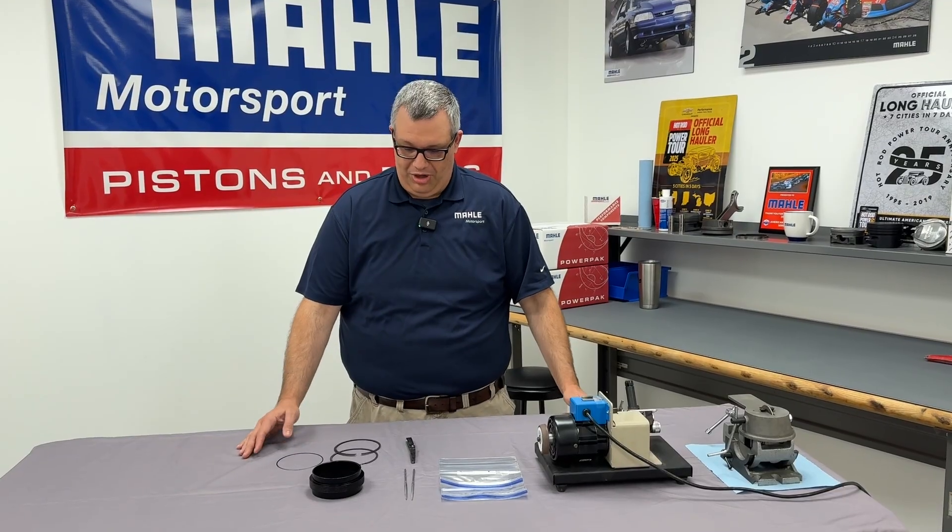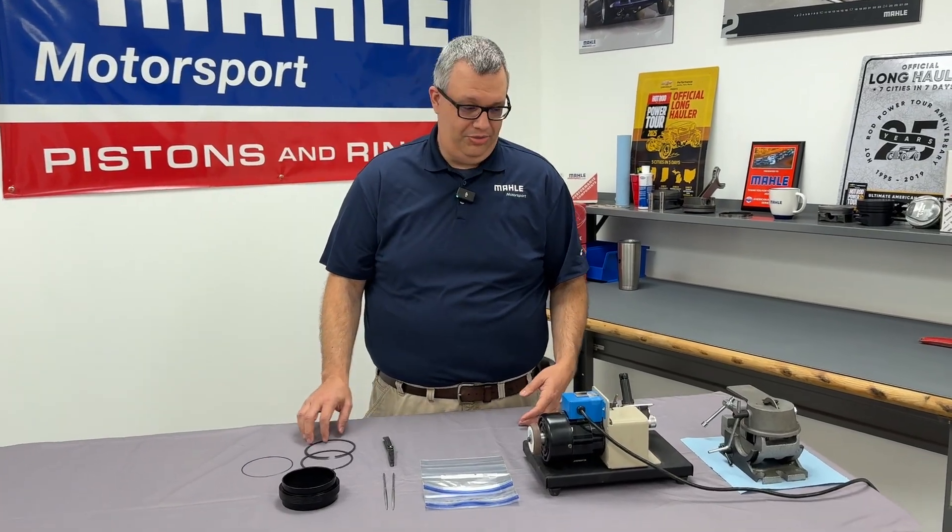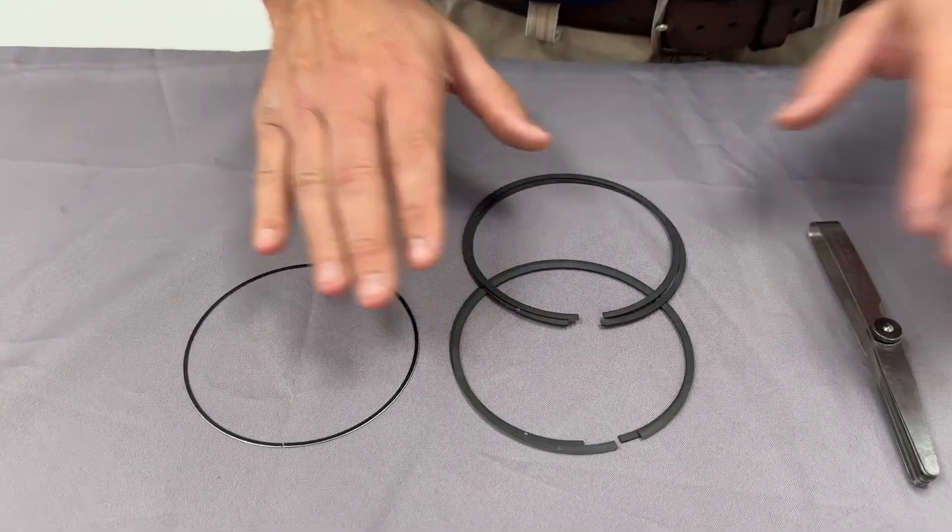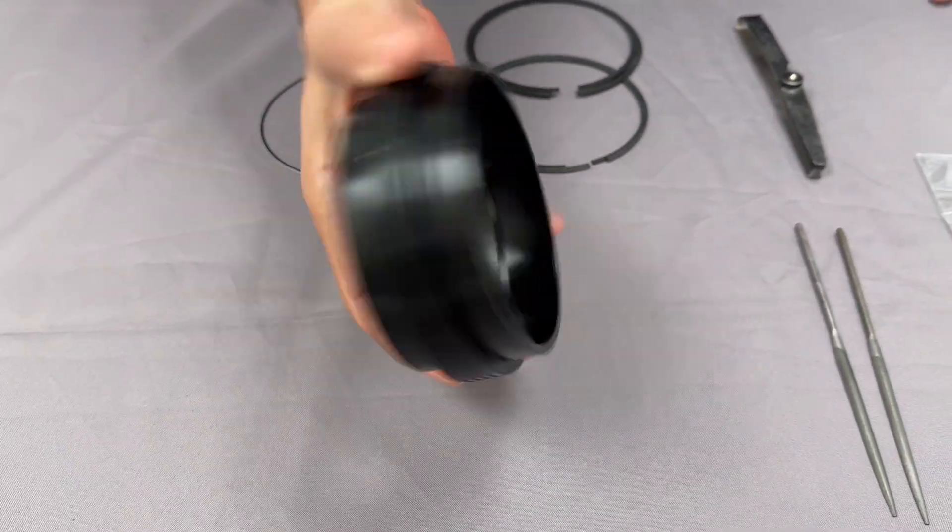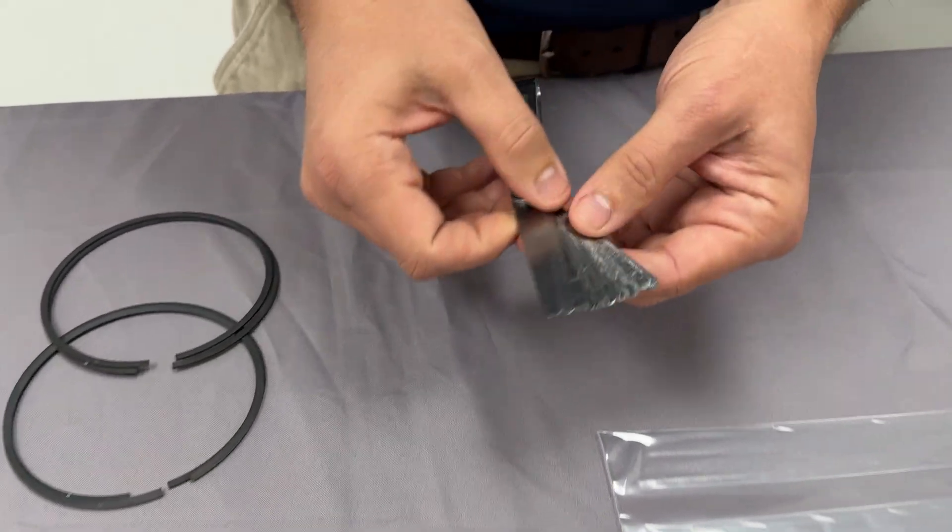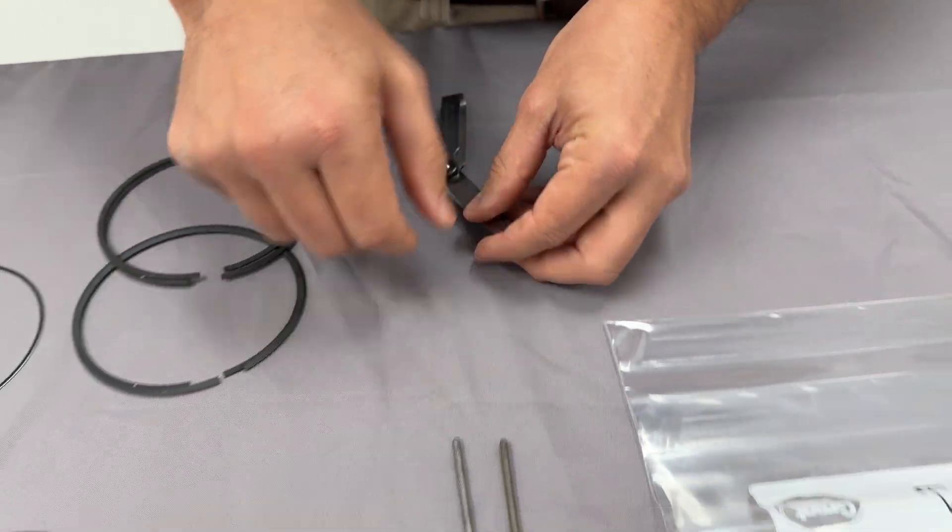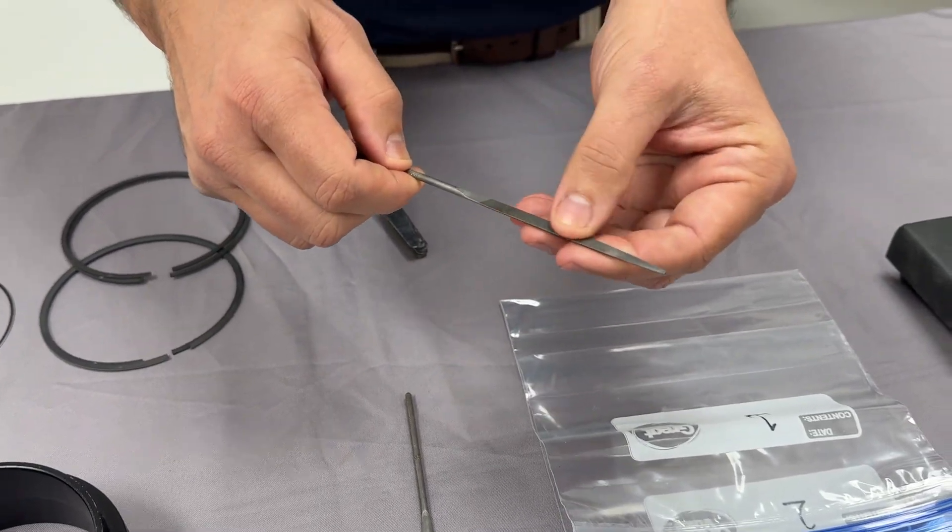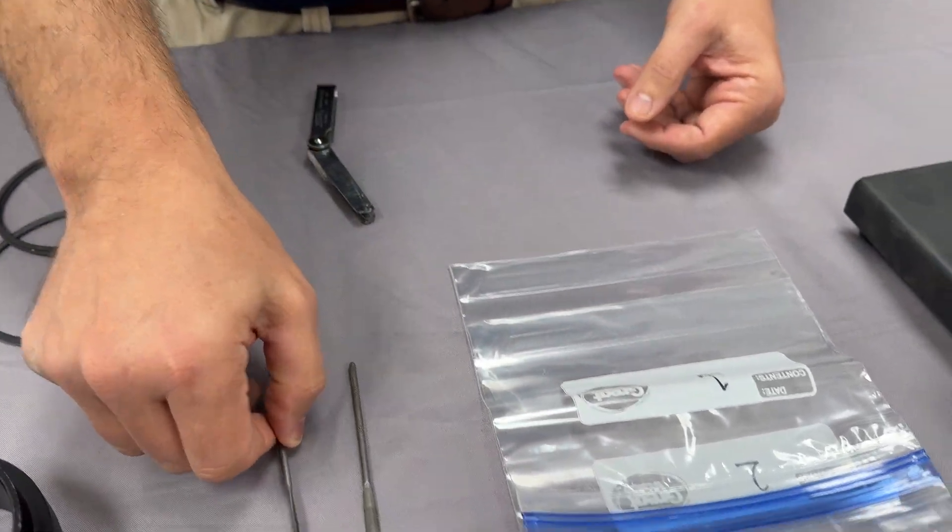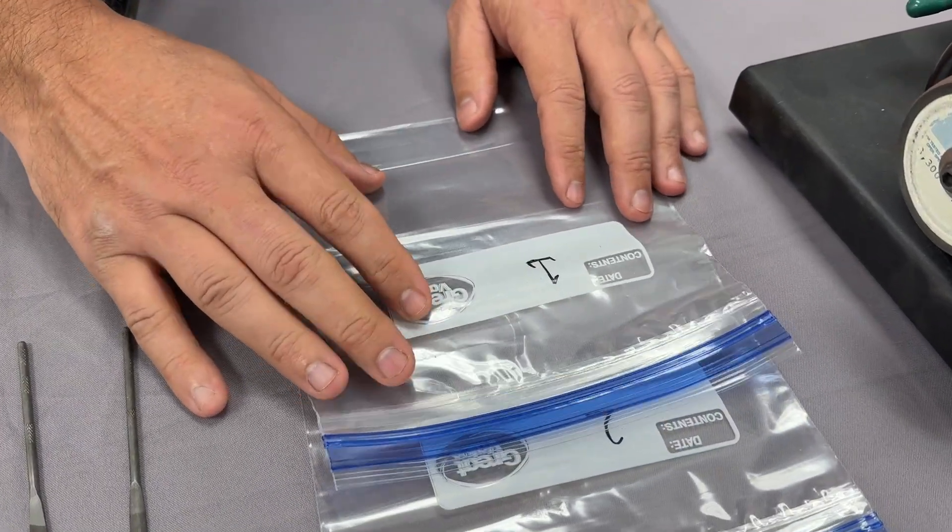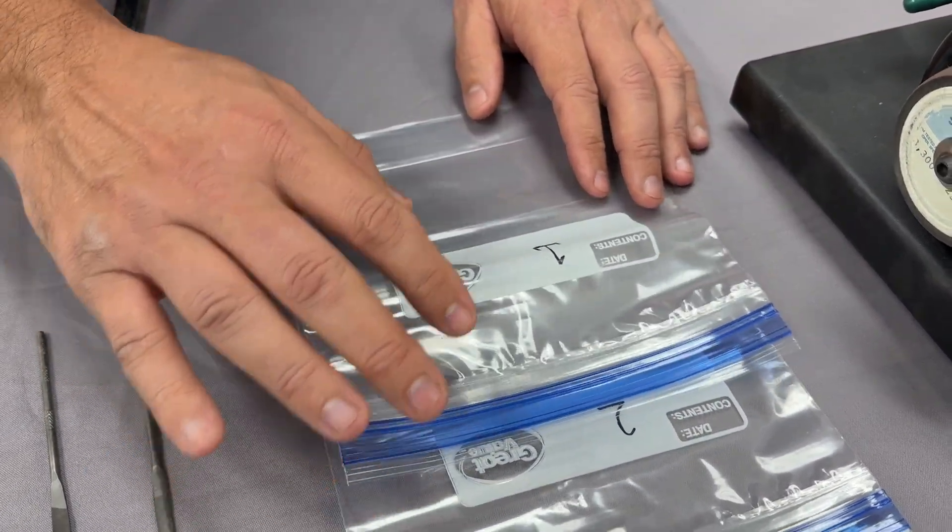Now that we've talked about what ring filing is and why we're going to do it, we're going to go over some of the tools that we're going to use. We've got the rings here. Here we have a ring squaring tool. We need some feeler gauges. We need some files. This is a real fine file. We need some way to keep the rings separated to what cylinder that we actually gap them for.